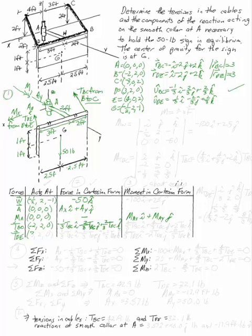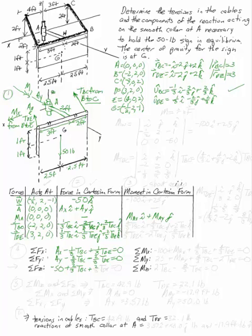Once all forces are in Cartesian form, we sum the forces. The sum of forces in X gives: AX - (1/3)TBC + (1/3)TDE = 0. We can write similar equations for the Y and Z directions, but this alone is insufficient to solve — we still need the moment equations.